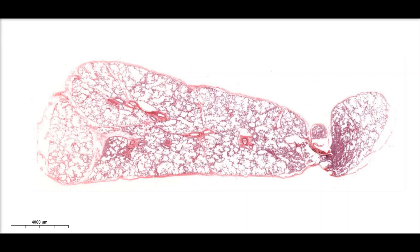The first type of epithelium we'll be looking at is simple squamous epithelium. Simple means that the epithelium is composed of one layer of cells, and squamous means that the cells are flat. The Latin word squama means scale-like.